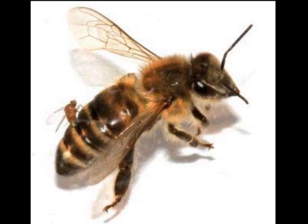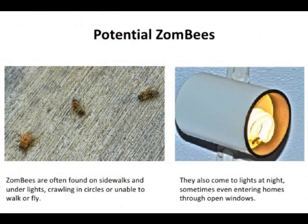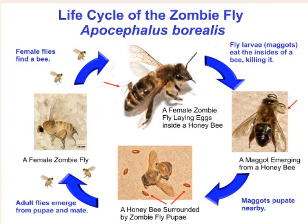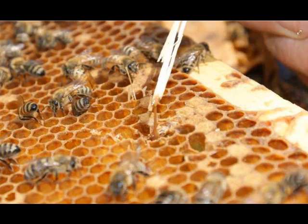Honeybees infected by the zombie fly leave their hives at night and are attracted to nearby lights, where they become stranded and eventually die. The presence of fly larvae in up to 18 percent of active foragers in some California honeybee hives makes the zombie fly a potential contributor to hive decline.